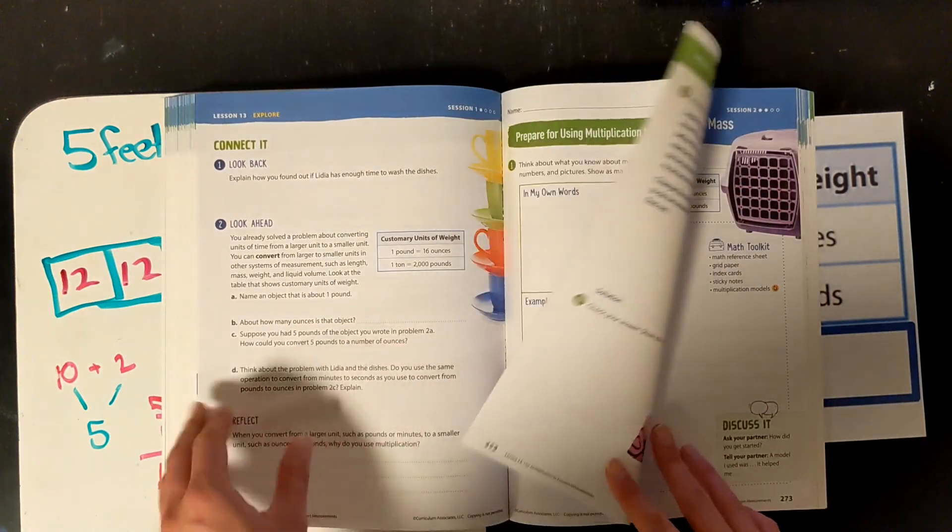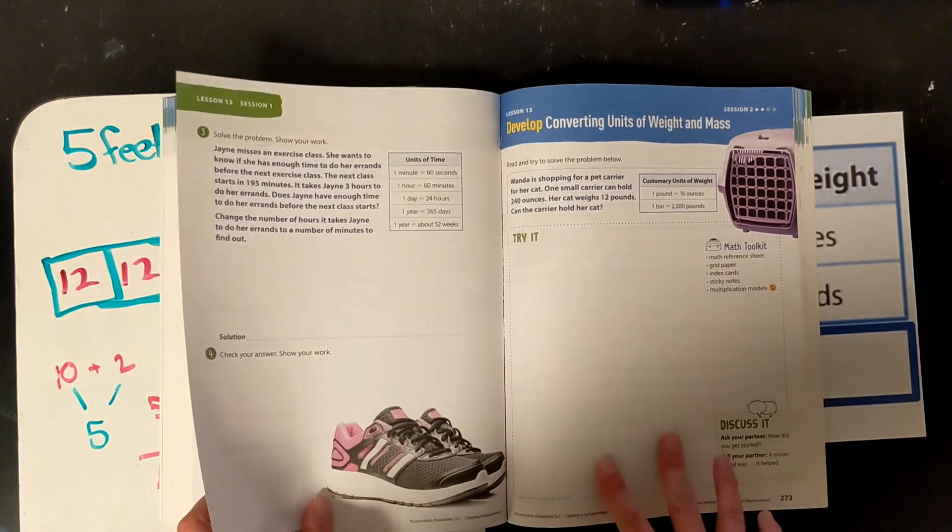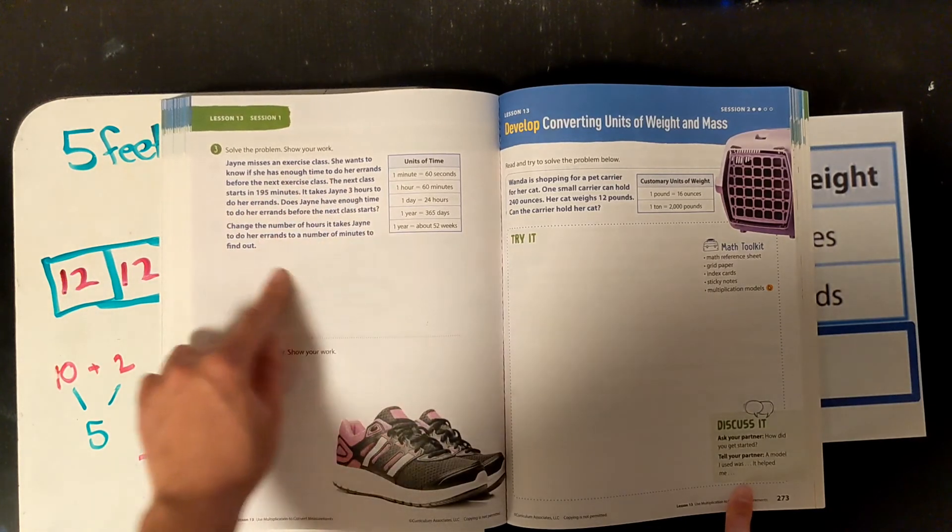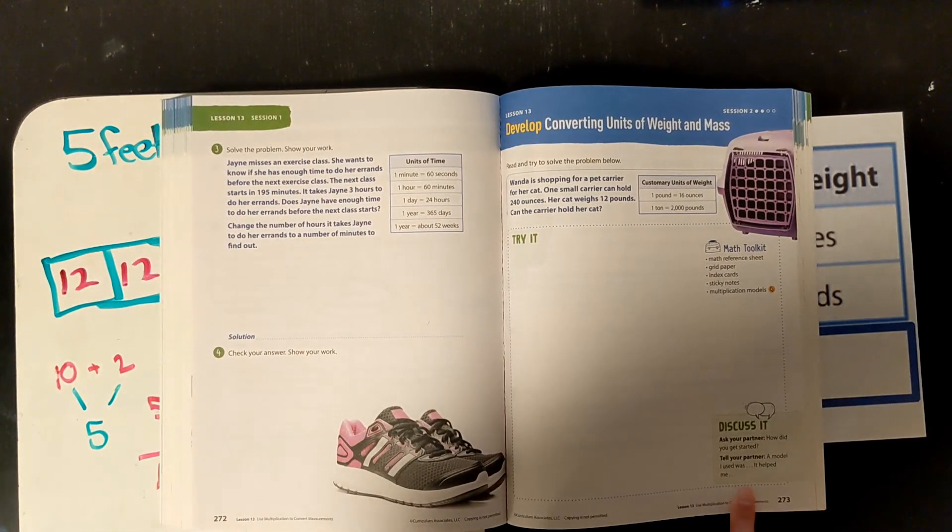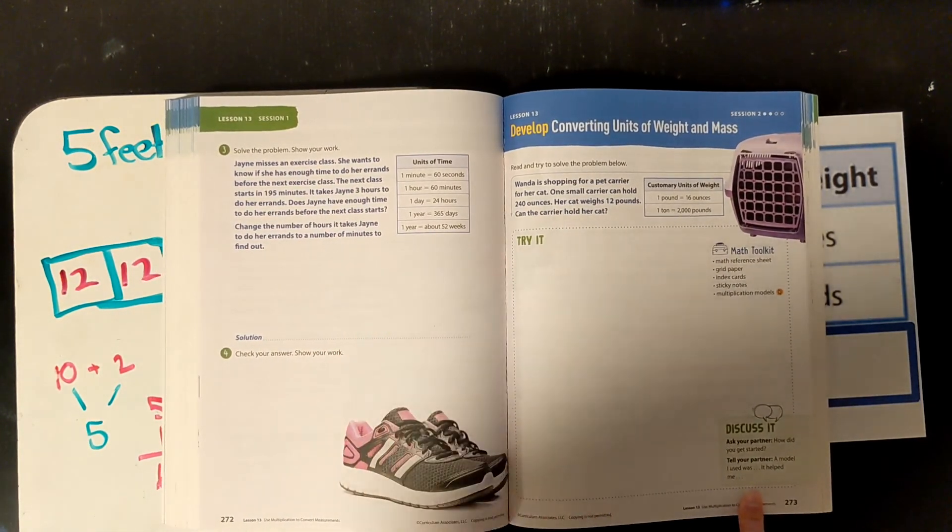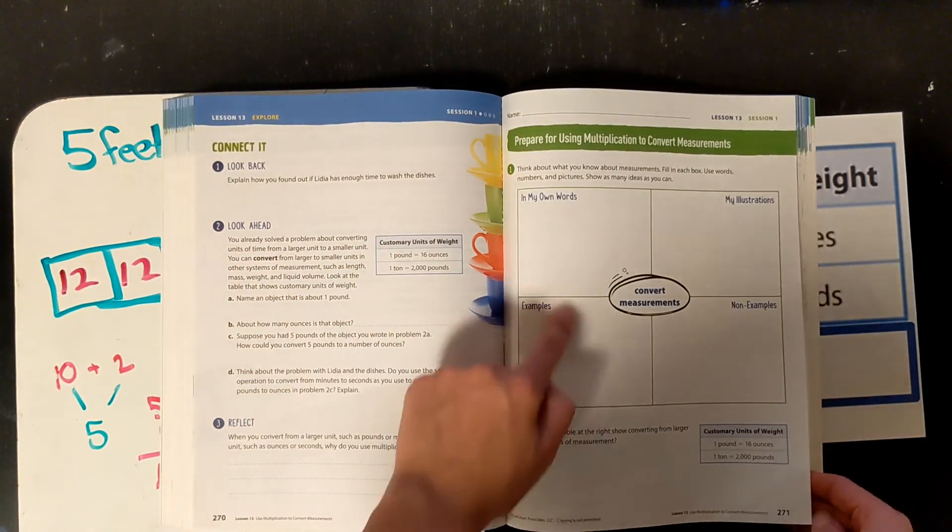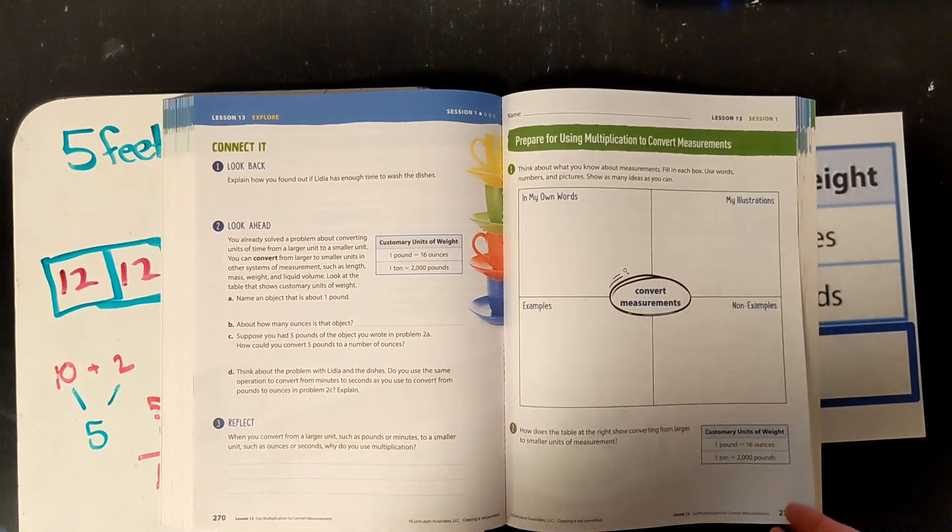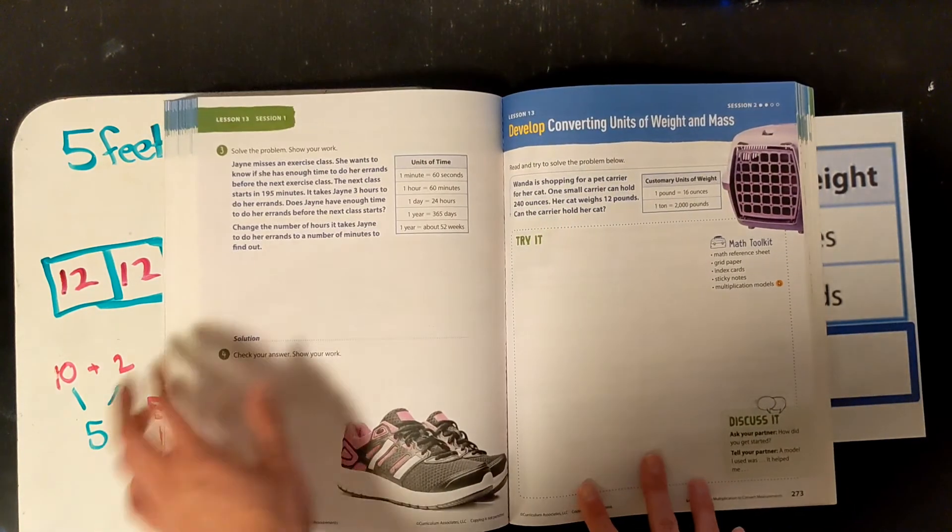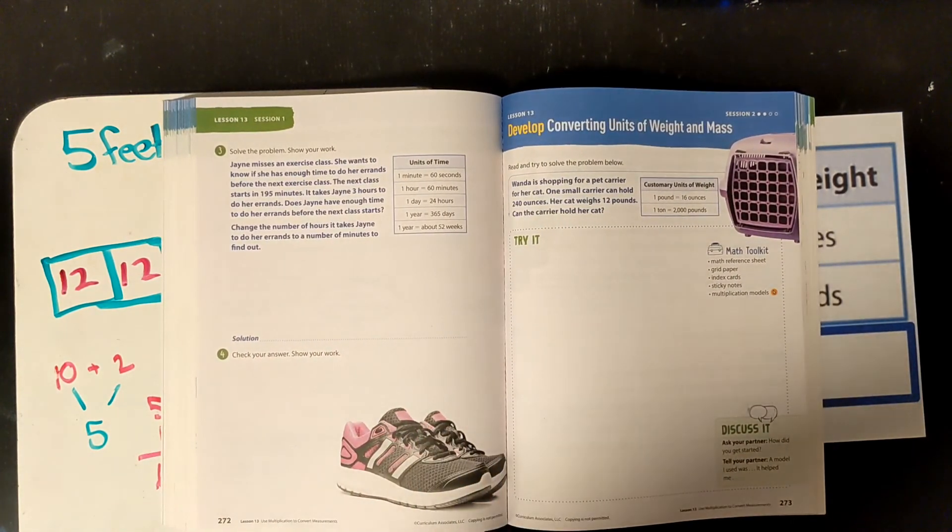So, start on page 269 and there are some word problems. Same chart. And then you can keep going. So, I would go to page 272, 273 and try some of these word problems. Now, you can do this. You can read this if you want. And you can do your vocabulary chart if you want to.